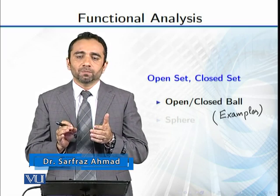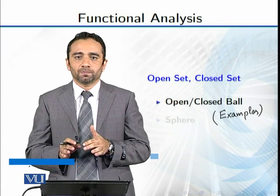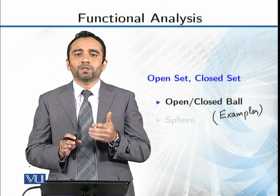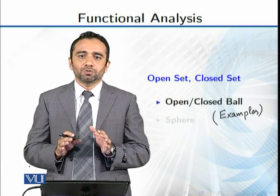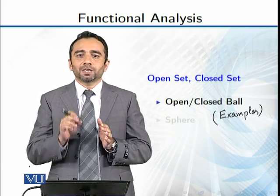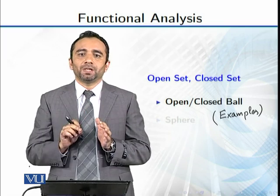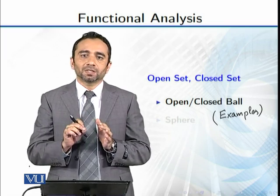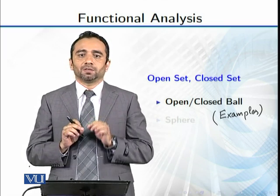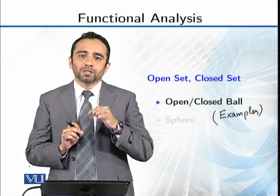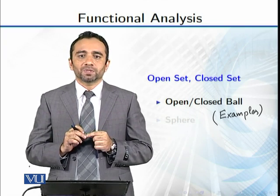If it doesn't happen, then if it is not open, then it is closed. The complement of closed is open. This was the definition of the set — we have a subset in which we can get a ball at every point. The ball is completely contained inside the subset. If the ball is completely contained inside the subset, then we call it an open set.